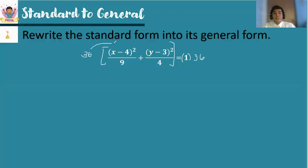So multiplying both sides of the equation by 36. So let's have 36 times the first term. So we cancel 36 and 9. So that will be 4 times the quantity (x-4)². Next, we multiply 36 to the second term. So we have 36 and 4 will be cancelled. So that will be +9 times the quantity (y-3)² = 36.